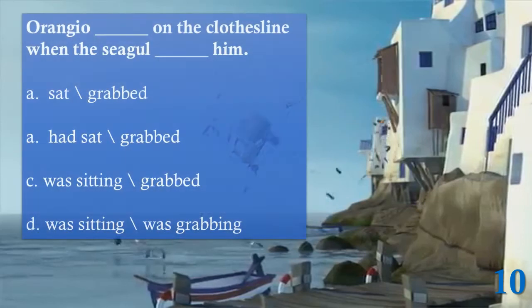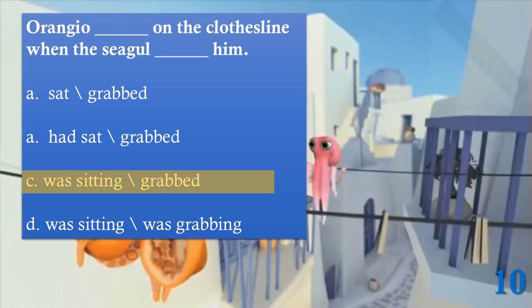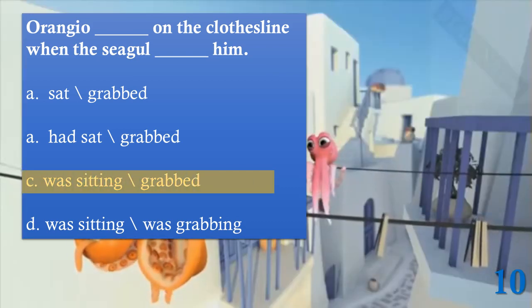Then what happened? Orangu was sitting on the clothes line when a seagull grabbed him — so Orangu was doing something and the seagull interrupted him. It's an interrupted action: past continuous plus past simple.